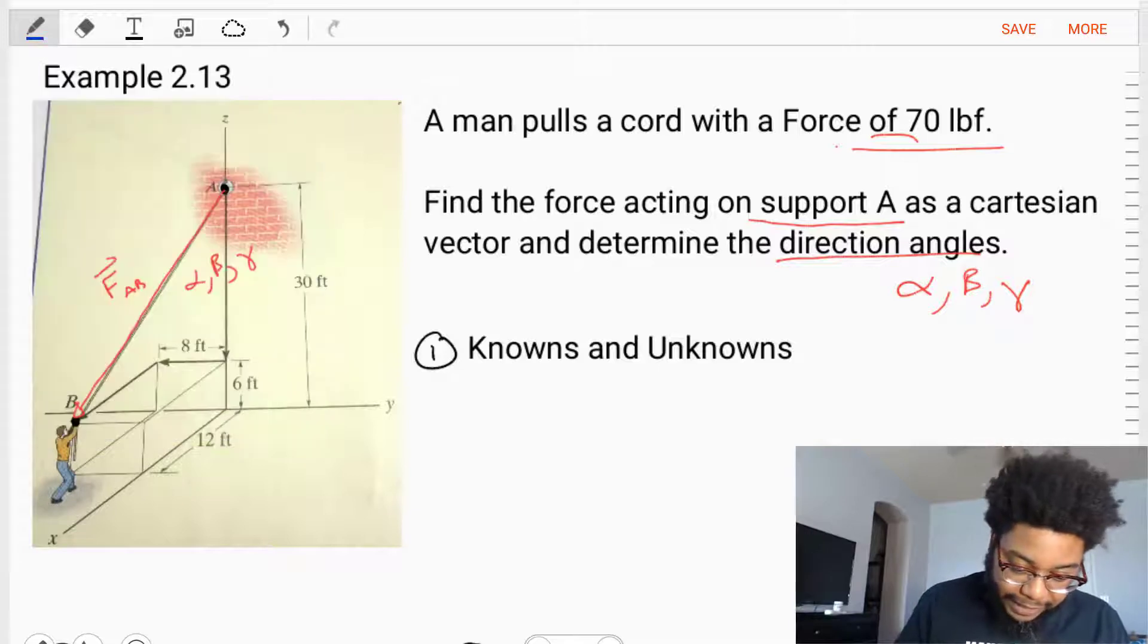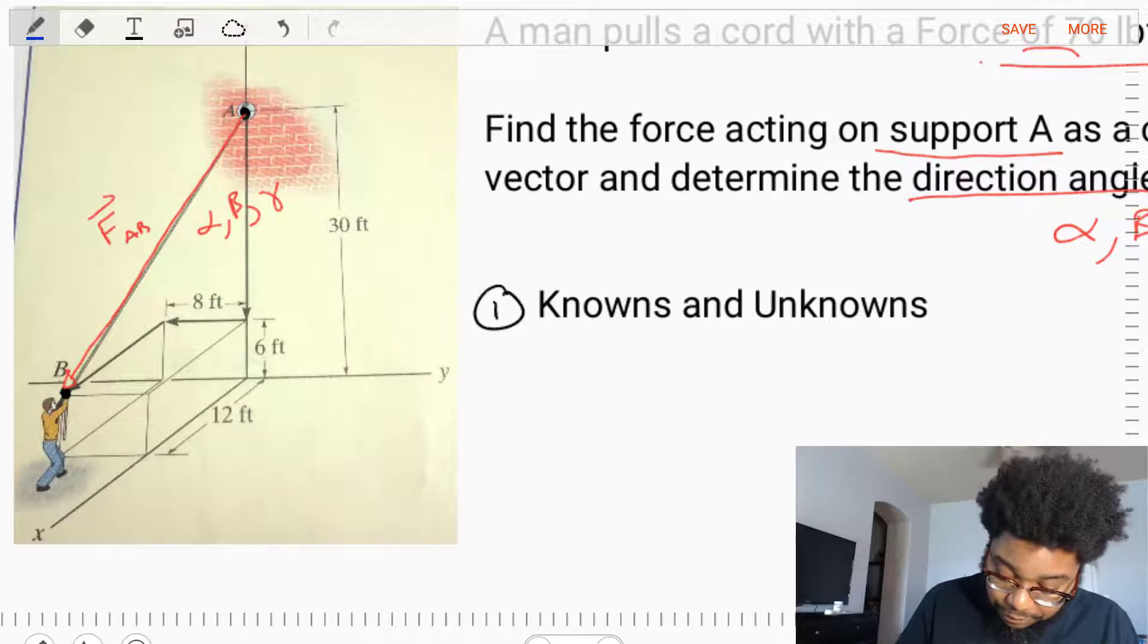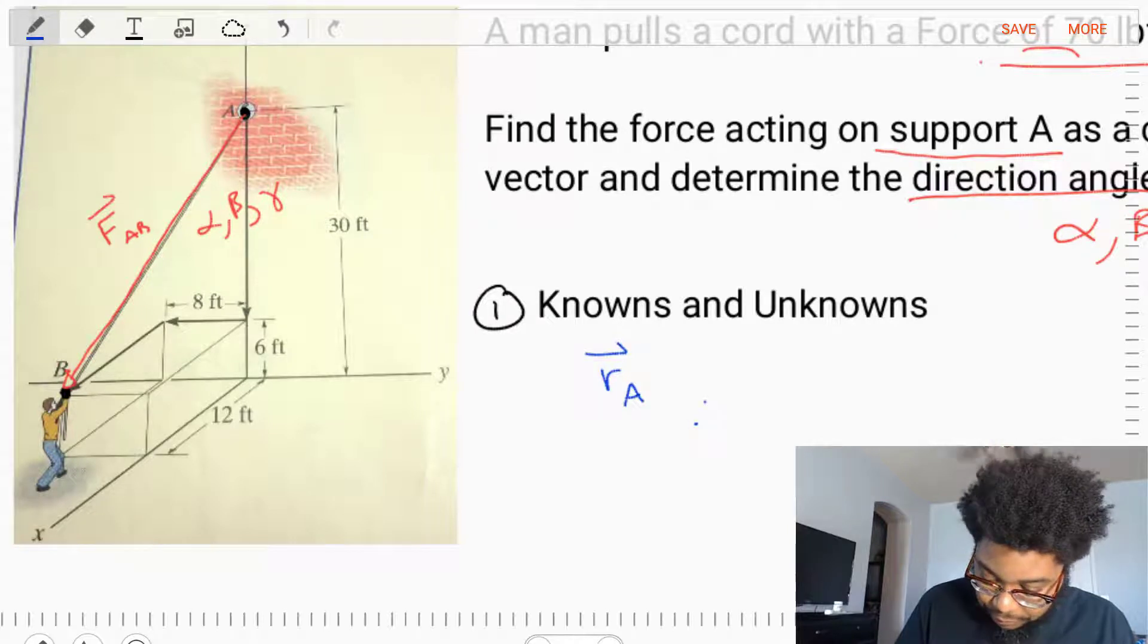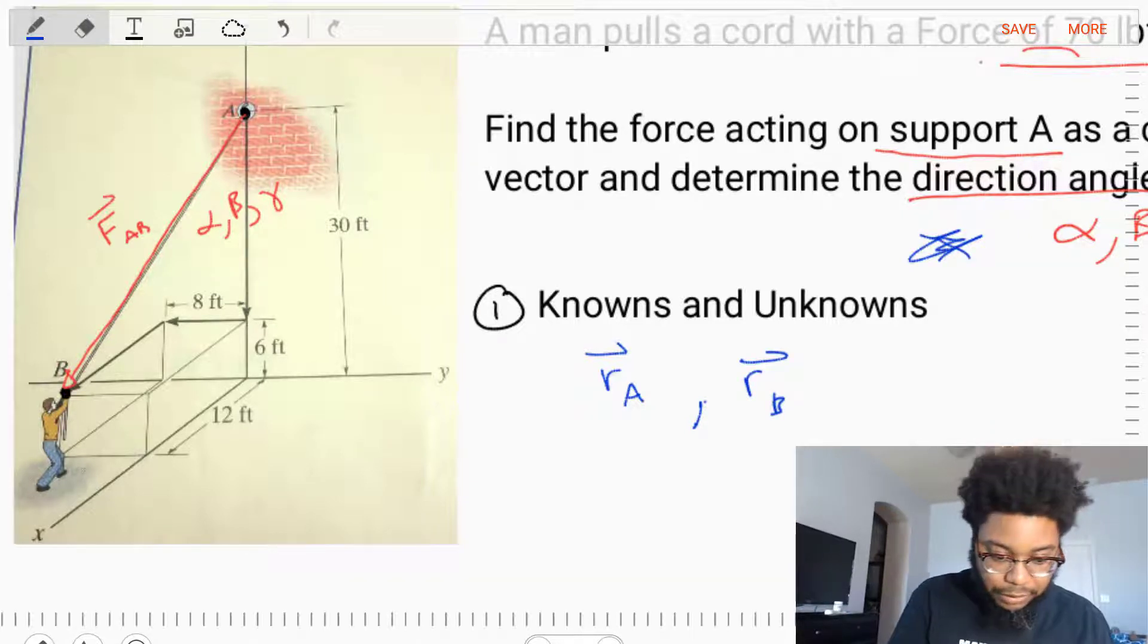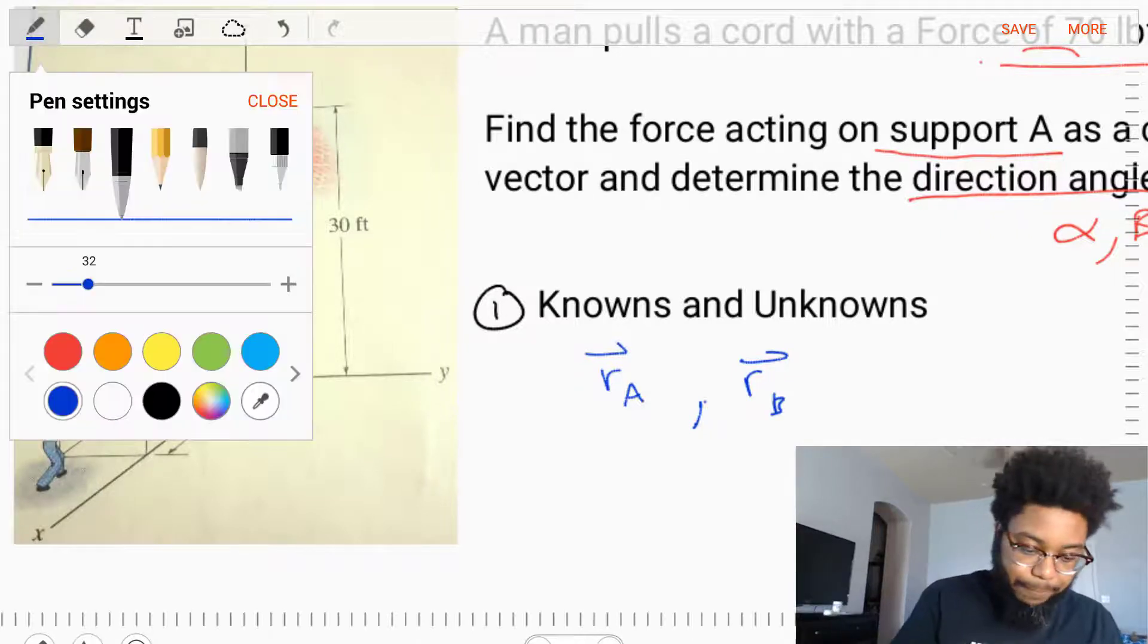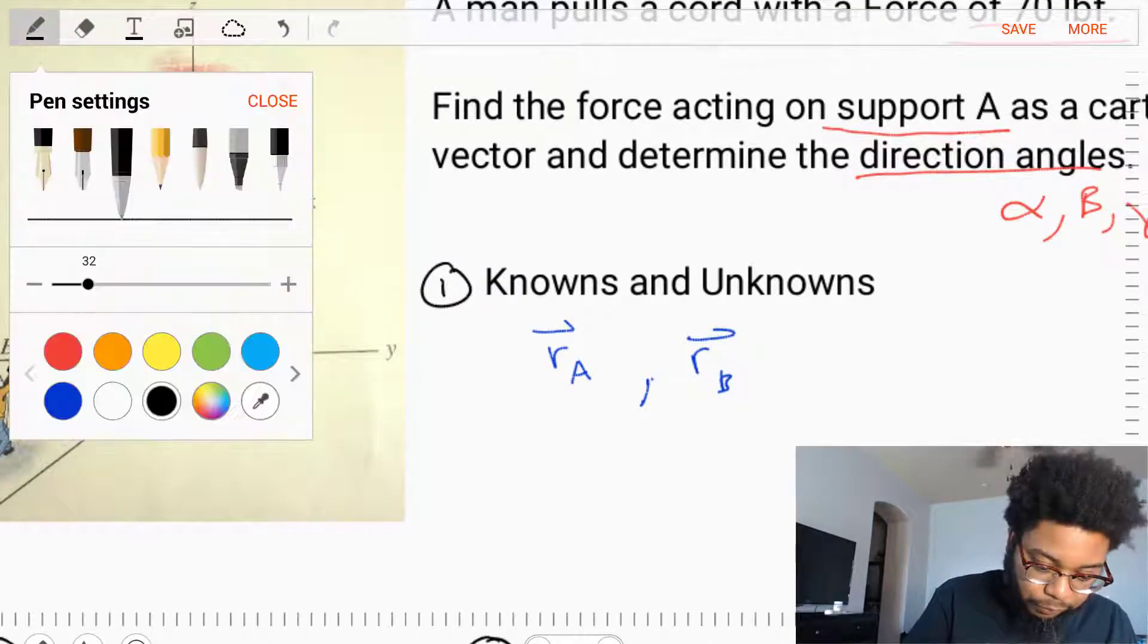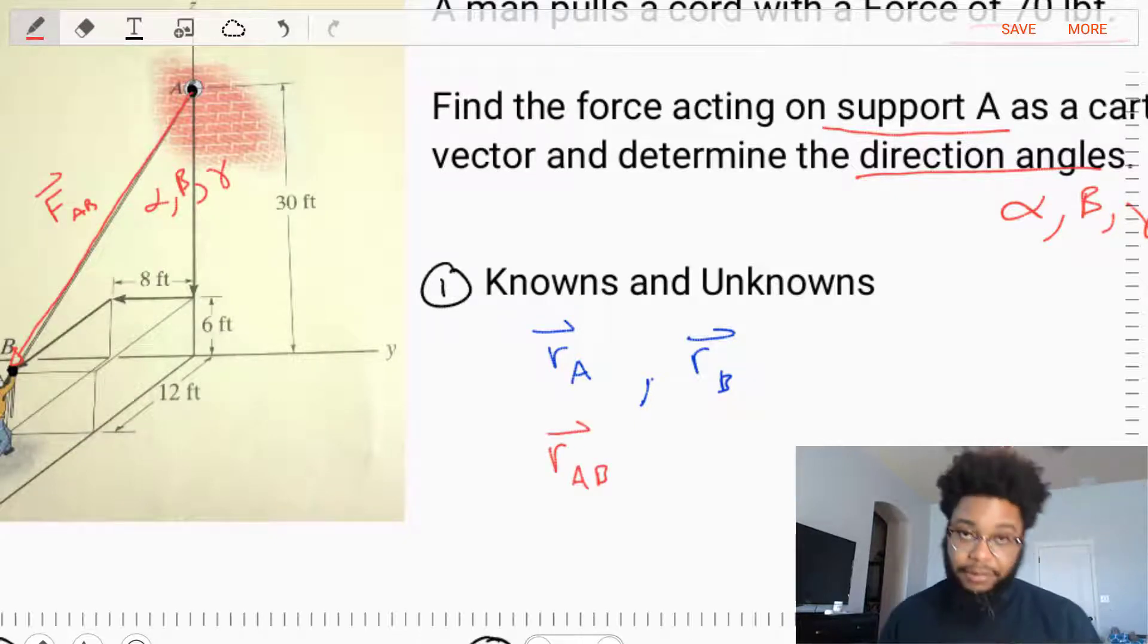Now, in examining this problem, there's a couple of things that we know. We know the position of A and we know the position of B. If we look at the diagram, we're given the dimensions for where those points are located. And from our A and our B, we can find the position vector RAB, the vector directed from A towards B.